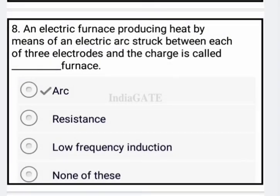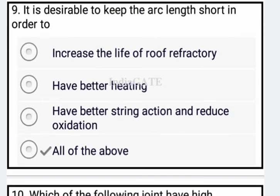Next question: an electric furnace producing heat by means of an electric arc struck between each of three electrodes and the charge is called an arc furnace — option B is your correct answer. Next: it is desirable to keep the arc length short — correct answer is option D: all of the above.